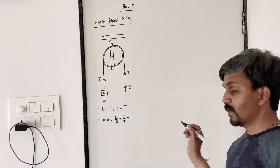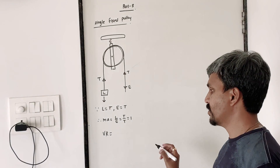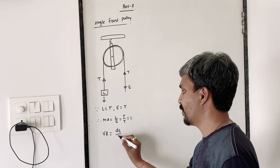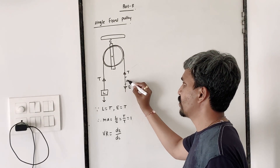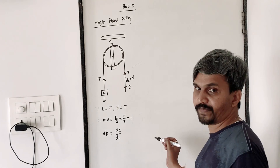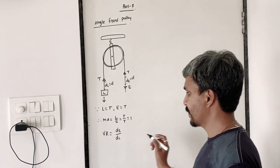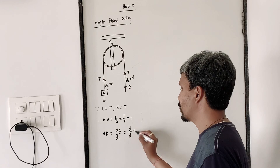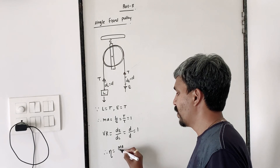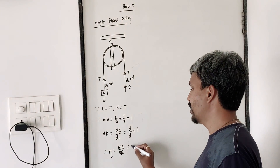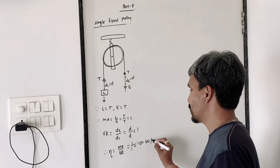Now what is velocity ratio? Velocity ratio is nothing but displacement of effort upon displacement of load. Now suppose my displacement — I am pulling from here to here — so this is displacement of effort, which is equal to D. This load is also lifted by the same amount, so D_L is equal to D. So it is D upon D, which is equal to 1. Efficiency is equal to MA upon VR; this is the ideal case, which is 1 upon 1, which is 1, or you can write it as 100%. This is about single fixed pulley.